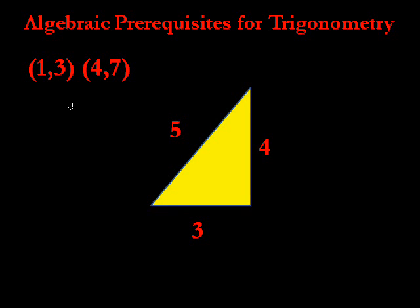What you can see is the distance between 1 and 4 is 3, and the distance between 3 and 7 is 4 just by simple math. So you can see